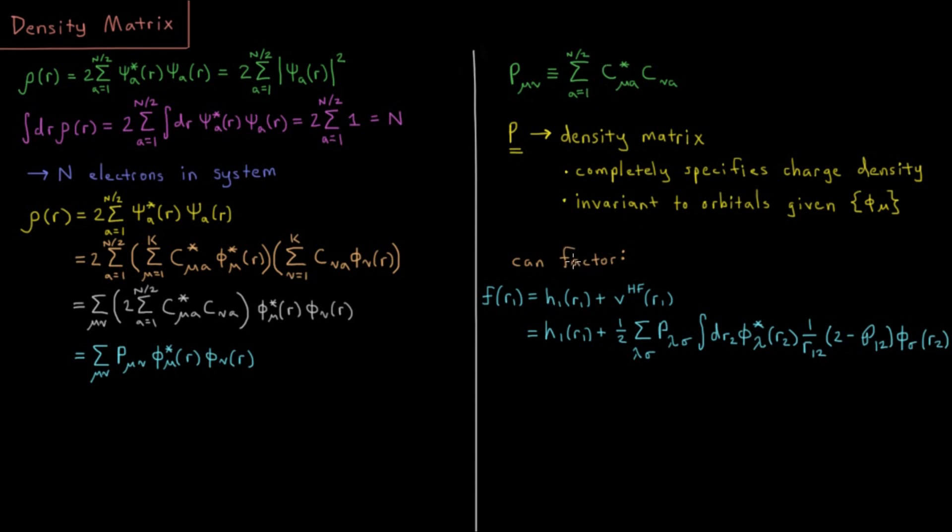Even though often we choose for convenience the canonical orbitals which are orthonormal to one another. The really interesting thing we can do with this is we can factor out the Fock operator.